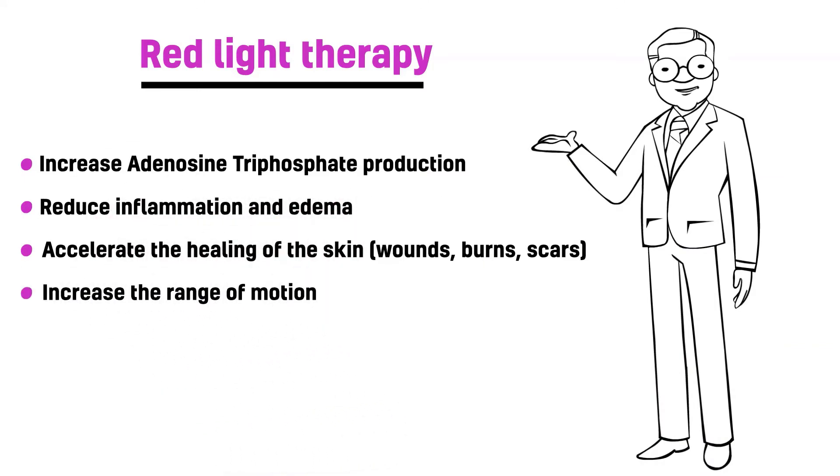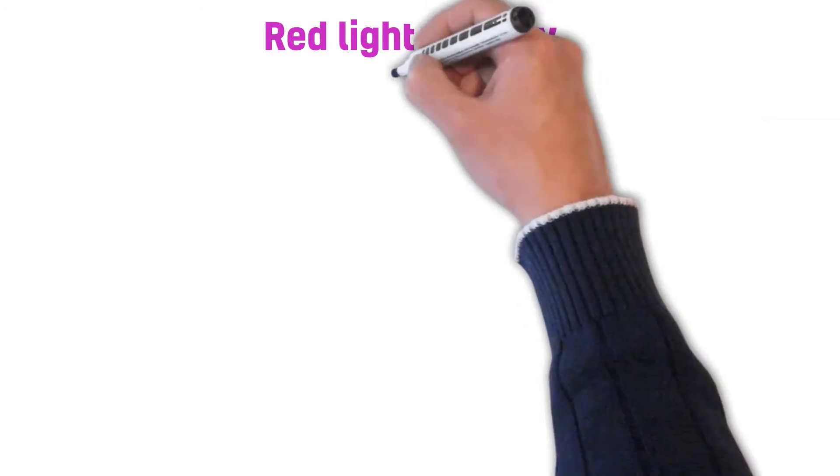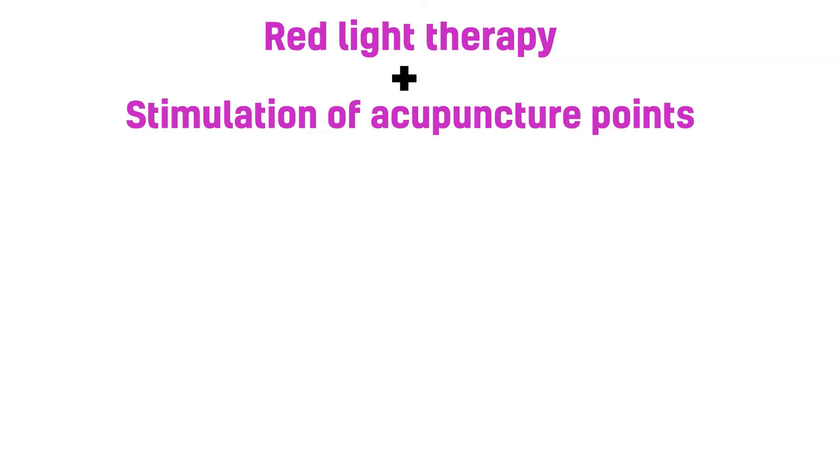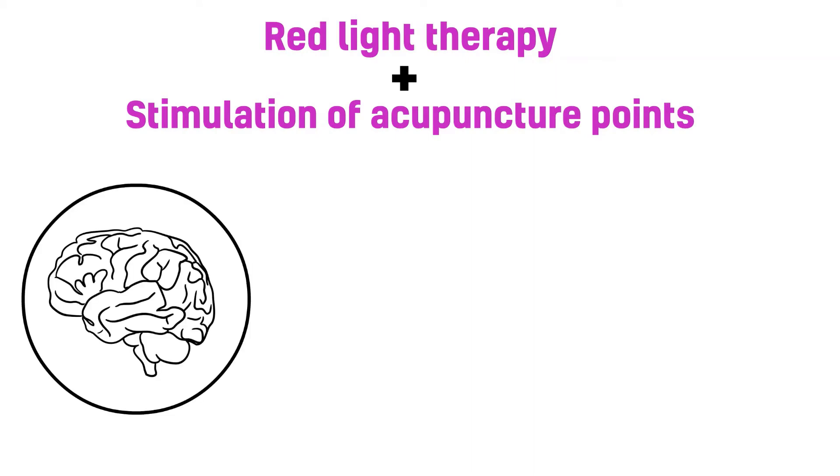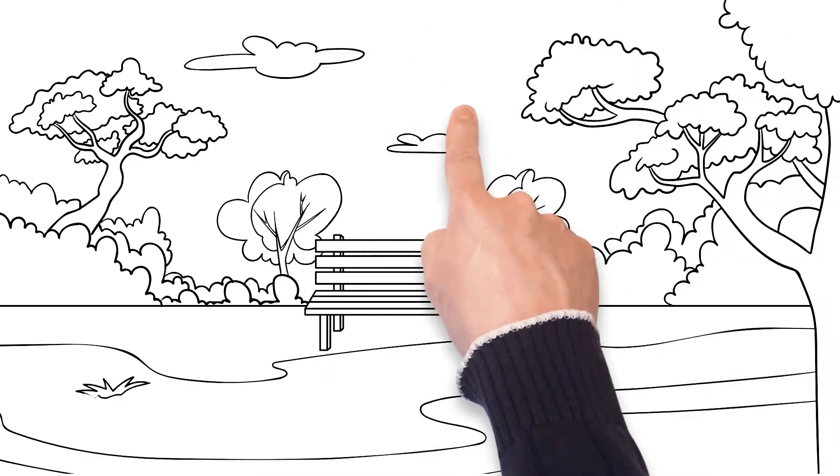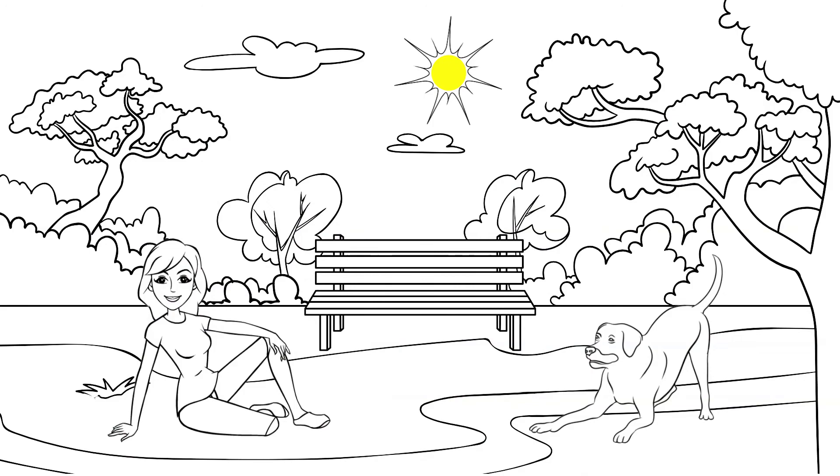It can increase the range of motion and relieve pain temporarily. Combining it with the stimulation of specific acupuncture points, we can stimulate the central nervous system, which will lead to the release of chemicals into the brain, spinal cord, and muscles. This may stimulate the body's natural healing abilities and promote physical and emotional health.